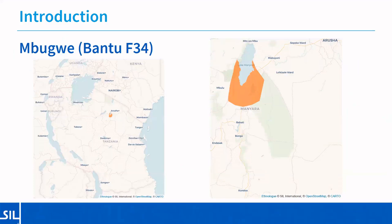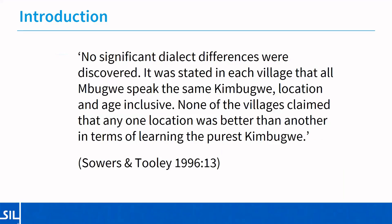Mbukwe is a Bantu language, classified as F34, spoken in the Manyara region of Tanzania. It's shaded in orange on these maps, and in 2009 it was estimated that there were about 37,200 speakers. A sociolinguistic survey in 1996 concluded that no significant dialect differences were discovered. In each village it was stated that all Mbukwe speak the same Kimbukwe, location and age inclusive.